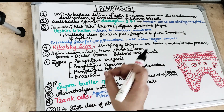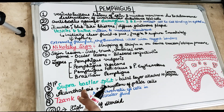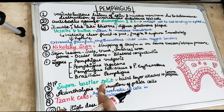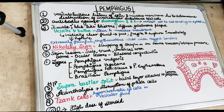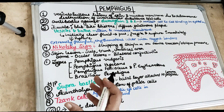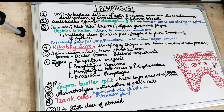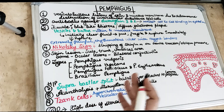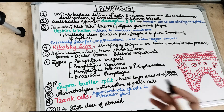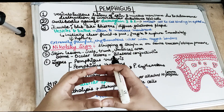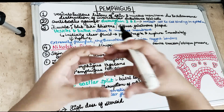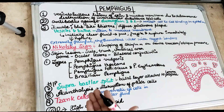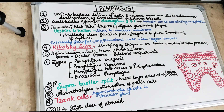In pemphigus, there is development of immunoglobulin G, which acts against the intracellular substance — specifically the desmosomes of the skin and mucous membrane. These autoantibodies, produced by the body itself, destroy and dissolve the desmosomal attachment between the cells. When this desmosomal attachment is lost due to the autoimmune reaction, the autoantibodies produced by our own body cause separation of the cells.